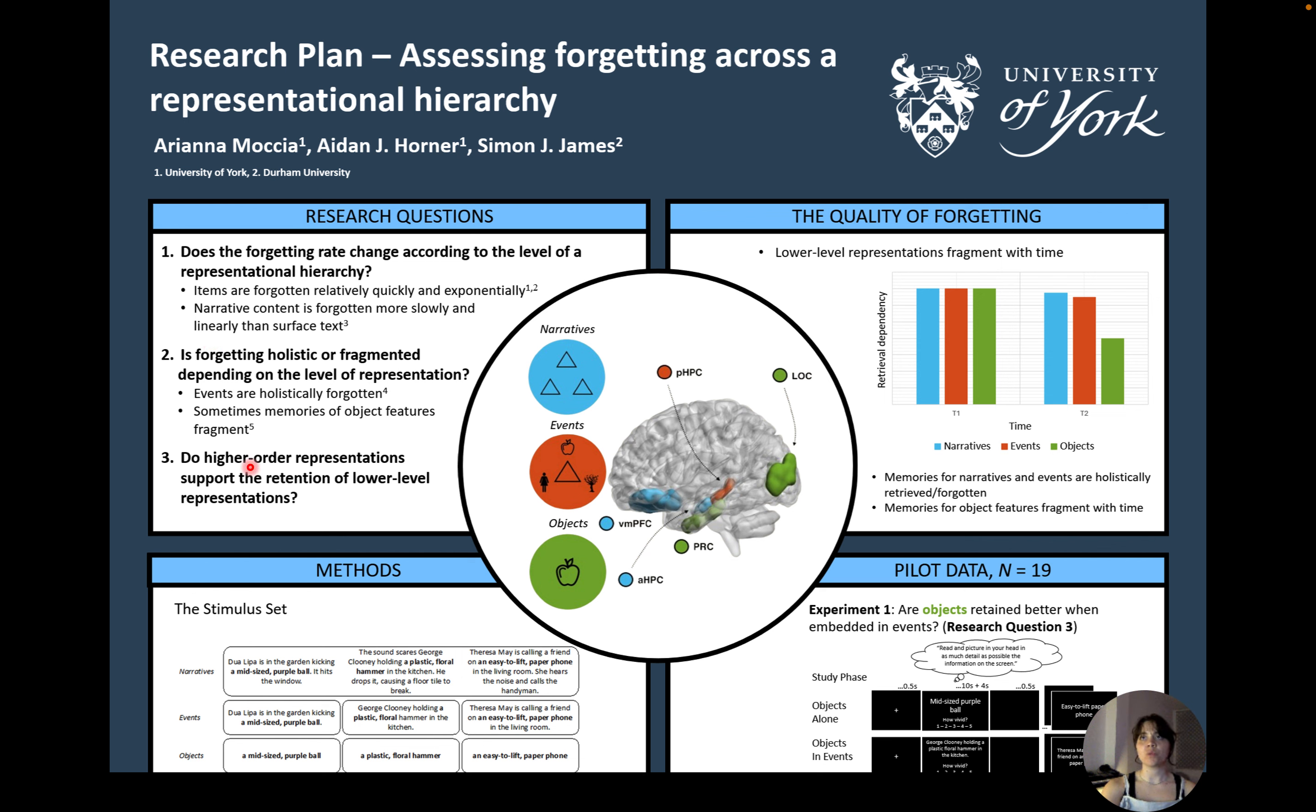The second question concerns the quality of forgetting. Previous research has found that event triplets formed of a location, person and object tend to be forgotten holistically, so that if an element of an event is forgotten, the other elements will be forgotten as well. However, this may not always occur for lower level information such as the color and orientation of an object. We also want to ask whether higher order representations support the retention of lower order representations, such that if we encode object features as part of more complex spatial temporal events, objects are remembered better and for longer.